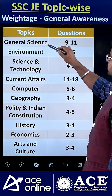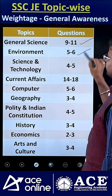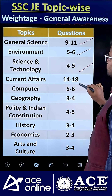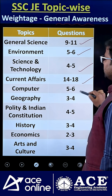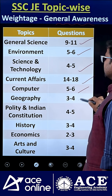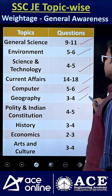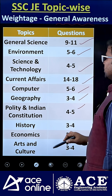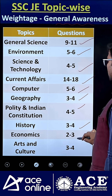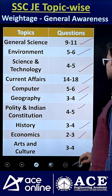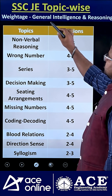From general science you are getting 9 to 11 questions, environment 5 to 6, science and technology 4 to 5, current affairs 14 to 18, computers 5 to 6, geography 3 to 4, polity and Indian constitution 4 to 5, history 3 to 4, economics 2 to 3, and arts and culture 3 to 4.